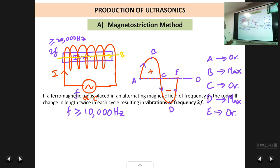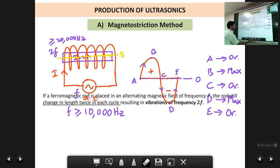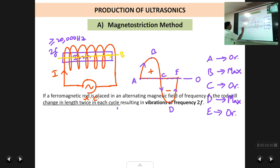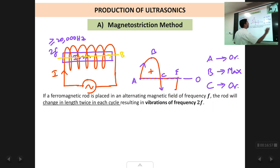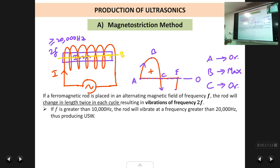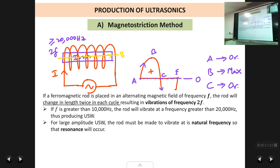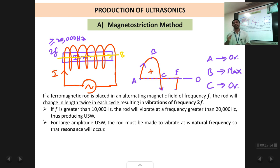To summarize: if a ferromagnetic rod is placed in an alternating field of frequency F, the rod will change in length twice in each cycle, resulting in vibrations of frequency 2F. If the frequency of the AC signal is greater than 10,000 Hz, the rod will vibrate at double the frequency and produce ultrasonic waves. Now, for the ultrasonic waves produced to have large amplitude, we must make the rod vibrate at its natural frequency.